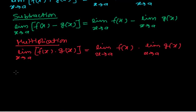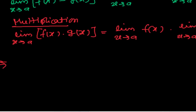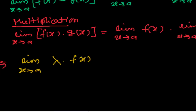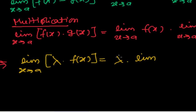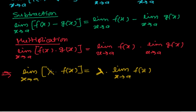There is a special case: suppose some function is being multiplied by some constant. The limit as x tends to a of lambda times f(x) — in such conditions, we can take the constant outside and write it as lambda times the limit as x tends to a of f(x). If a function is multiplied by a constant and we take the limit, we can simply multiply the limit of that function by the constant.